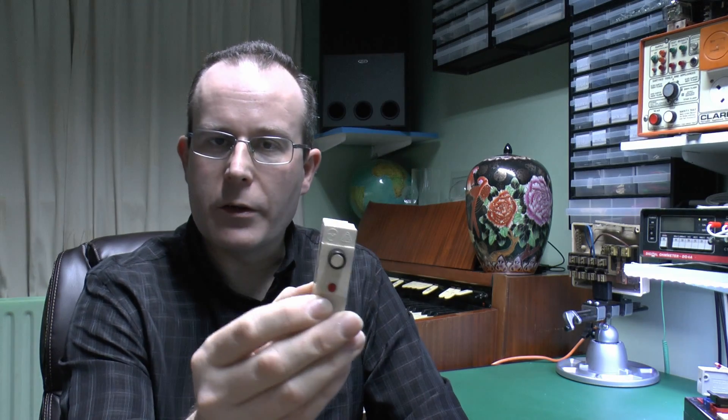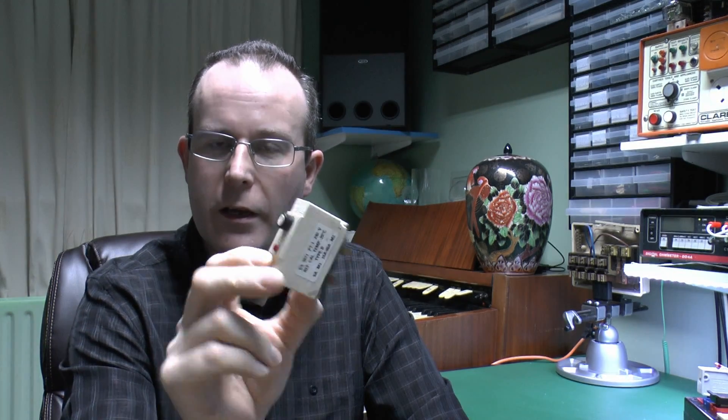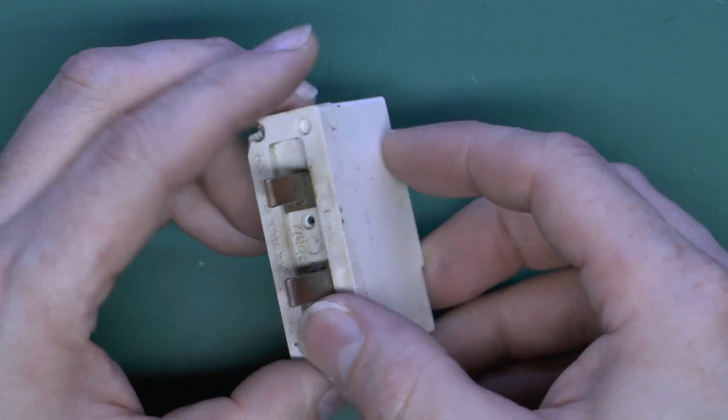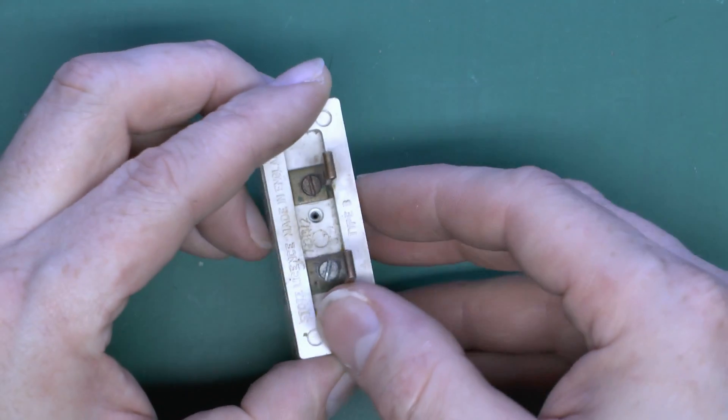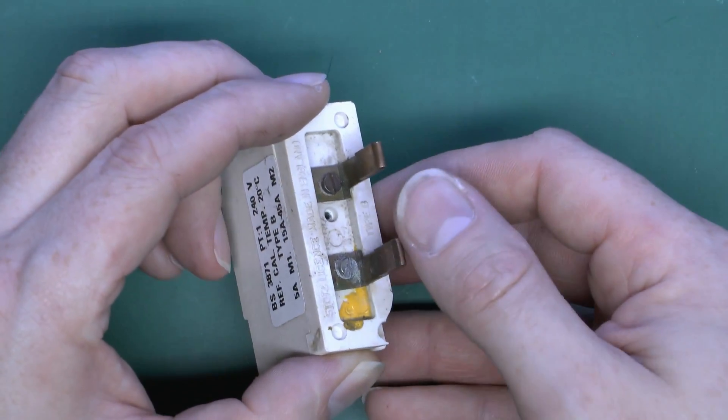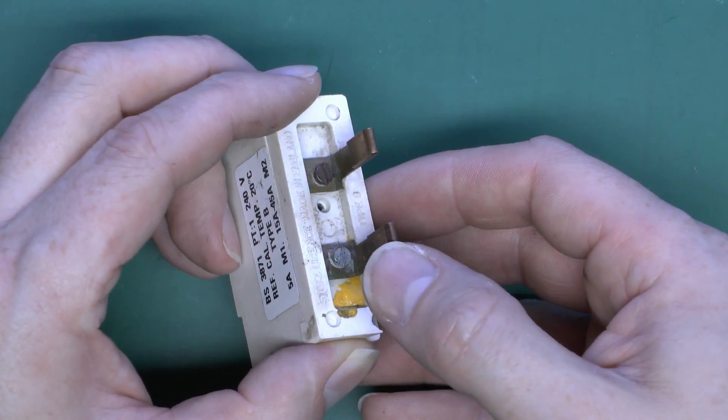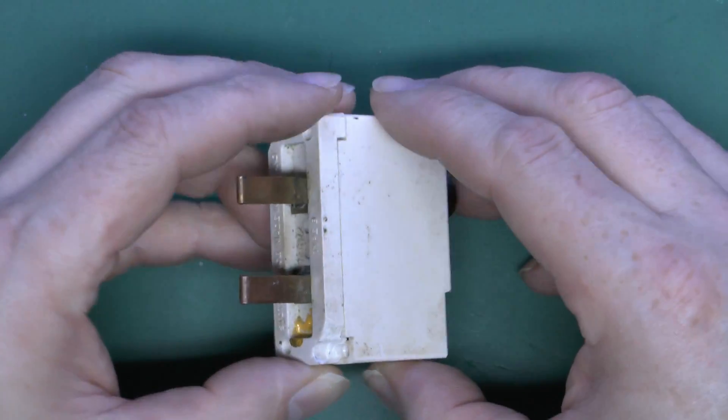But anyway, I've got this one here which is a 5 amp variety, so we'll just open it and see what's inside and see if we can get it actually to operate. So here is the device, and it's got the two flat blades which get plugged straight into the front of the Wilex fuse box, and that's pretty much the same as the original fuses would go in there.